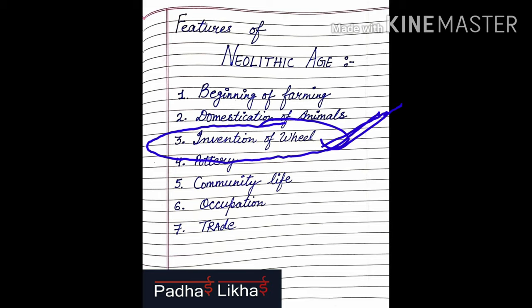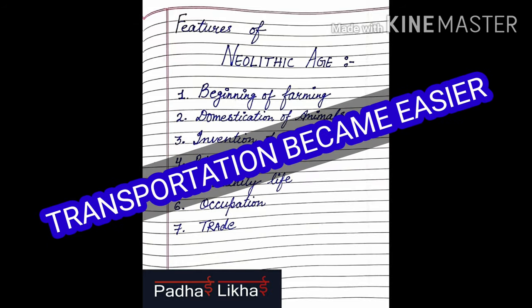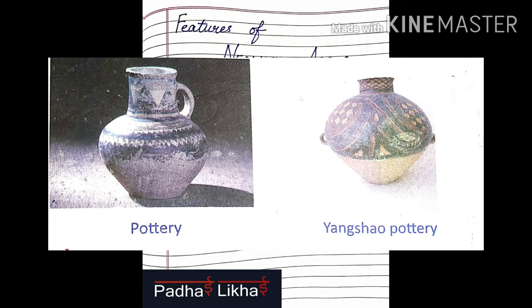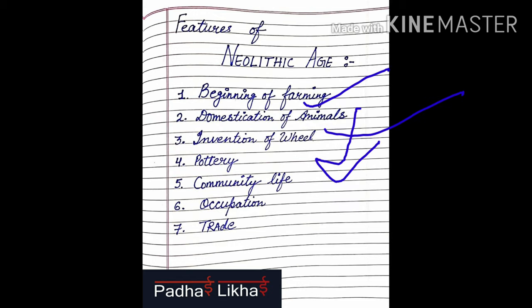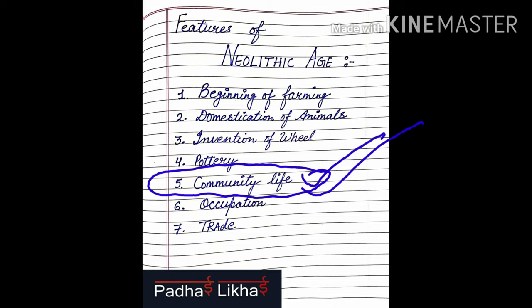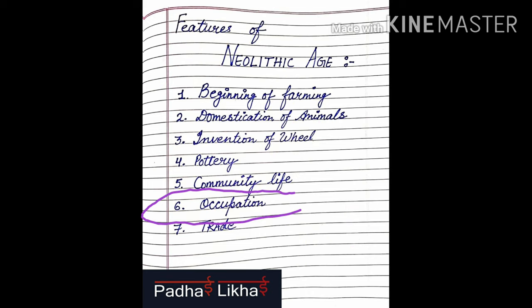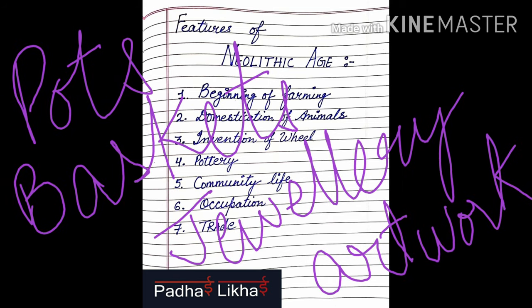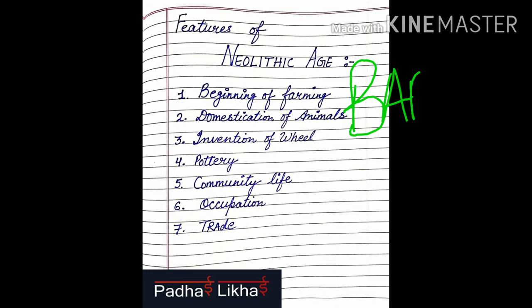They invented the wheel, which was the most important discovery of that period, as it made the transportation of goods and people much easier. They also started making pots, which were colorful and decorated with various designs, mostly geometrical. Agriculture and domestication of animals resulted in settled communities — village life began. People started living in small communities in mud houses, houses made of wood, or sometimes made of stone. They gained occupations such as making pots, baskets, jewelry, artwork, and craft work, and these goods were exchanged with surplus grains through the barter system. Trade also emerged.